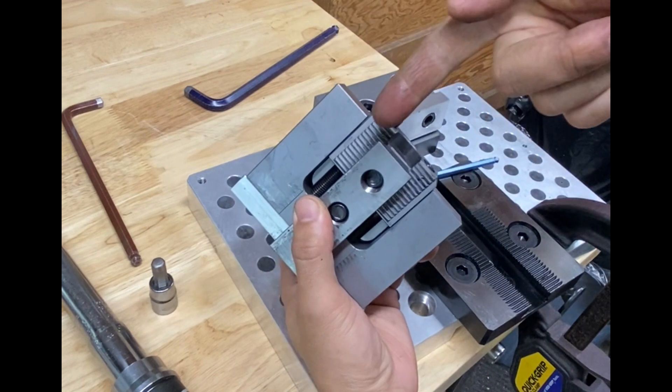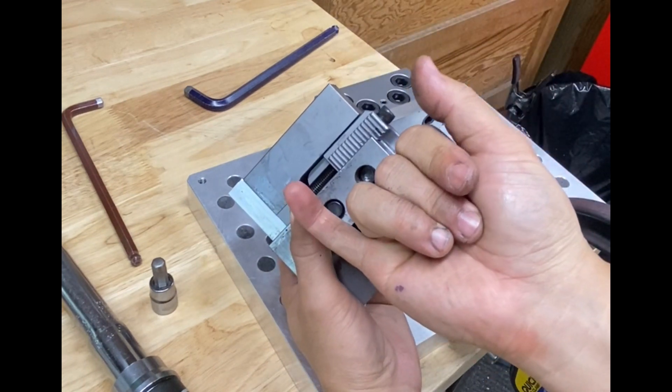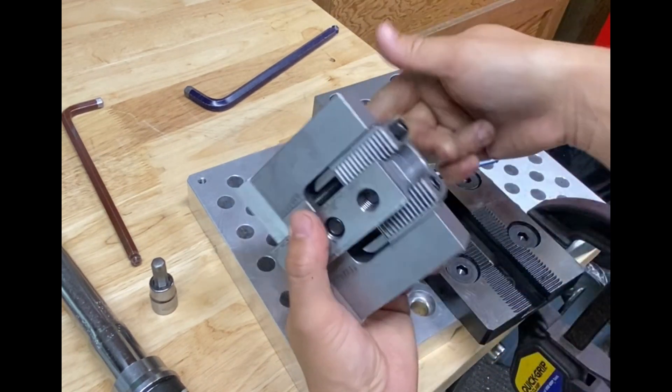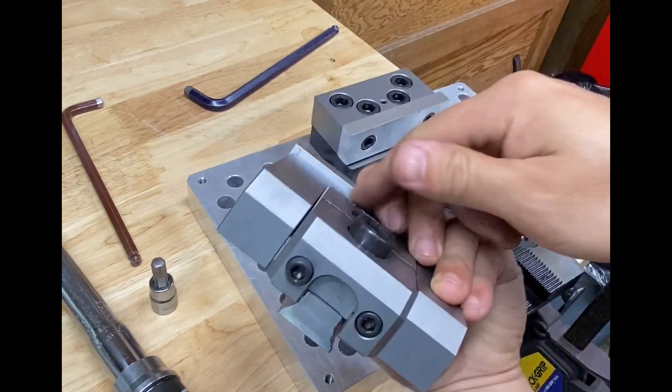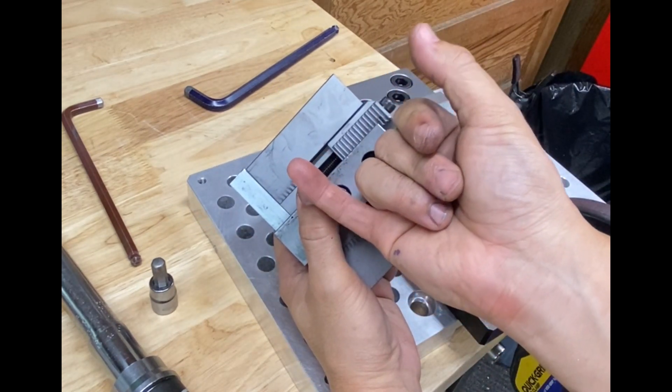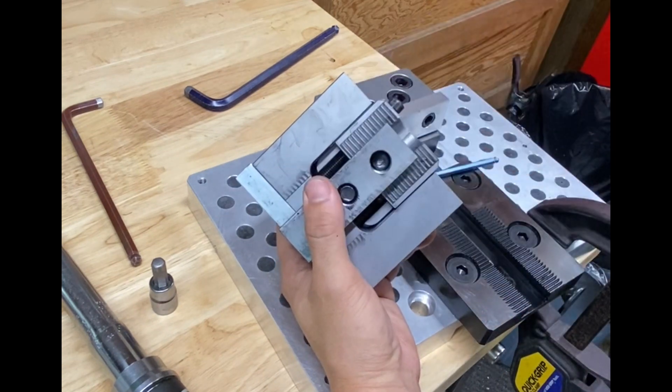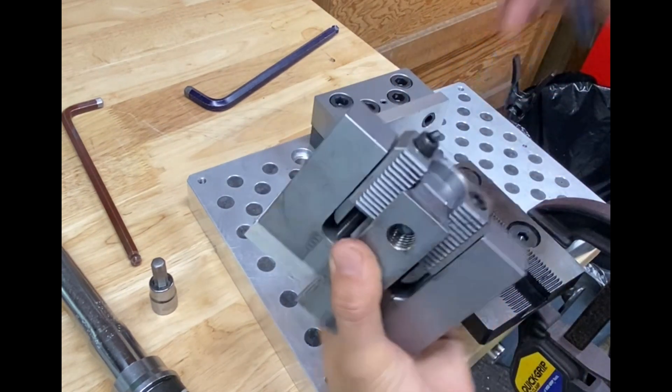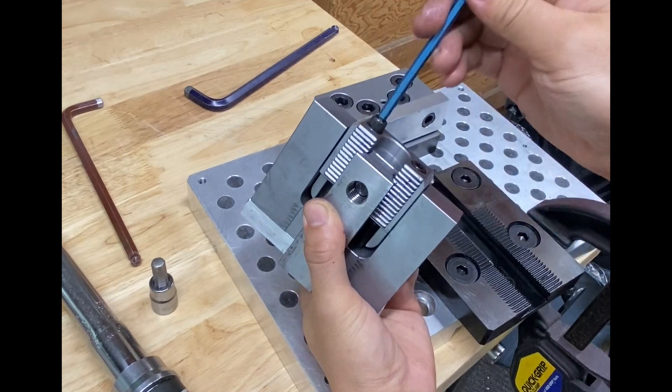This is what makes the moving jaw move back on its own. See, it's basically spring loaded. As the moving jaw goes forward it compresses that spring inside, so when you loosen here at the wedge, the spring is going to want to push out this way and that makes the moving jaw move back on its own.